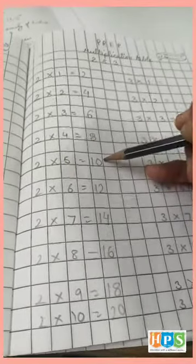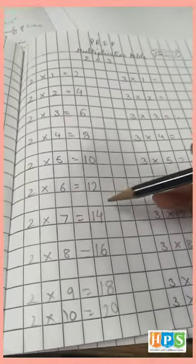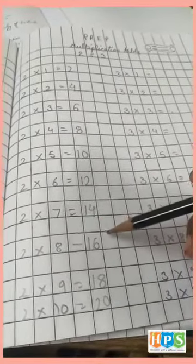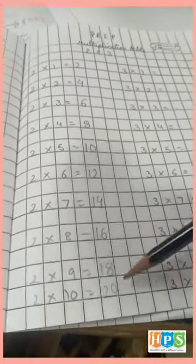2×5 is 10. 2×6 is 12. 2×7 is 14. 2×8 is 16. 2×9 is 18. 2×10 is 20.